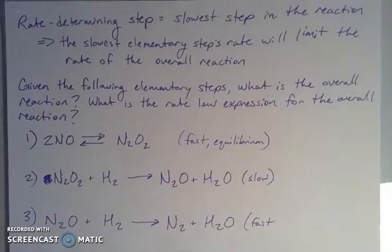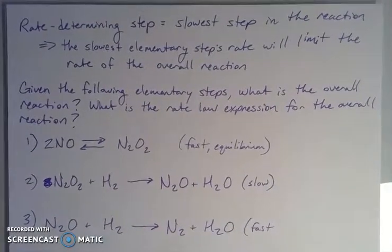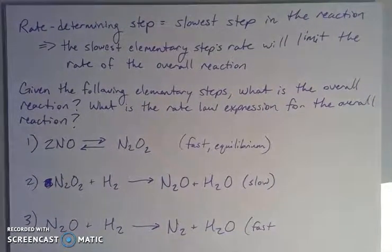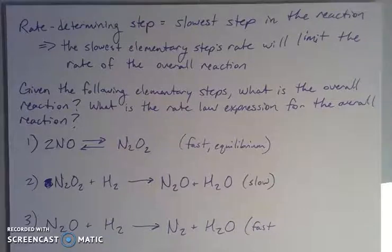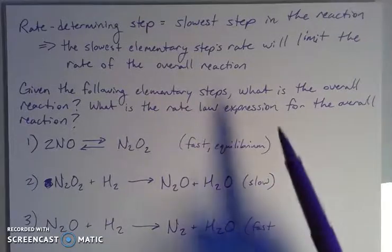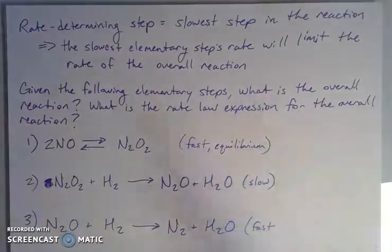So what we're talking about is trying to determine the rate of the overall process from the individual pieces. The rate determining step, or rate limiting step, is the slowest step in the reaction. You have to be given information about the speed of these things in order to determine the overall rate of the process.